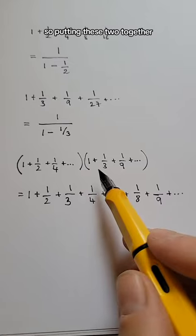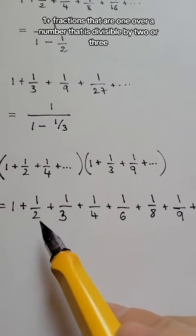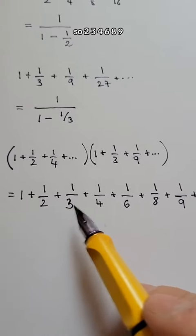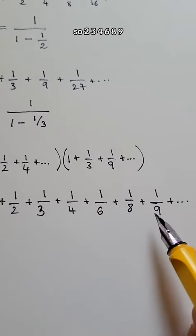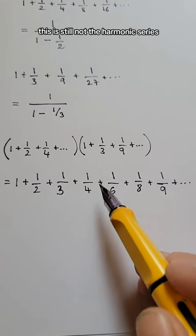So putting these two together, what I get is 1 plus fractions that are 1 over a number that is divisible by 2 or 3. So 2, 3, 4, 6, 8, 9, so all those. But you see, this is still not the harmonic series because I'm missing a fifth.